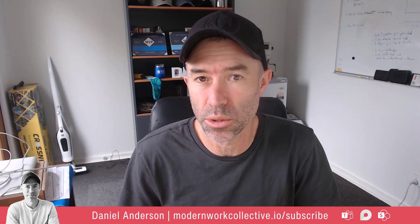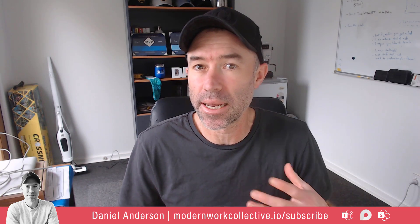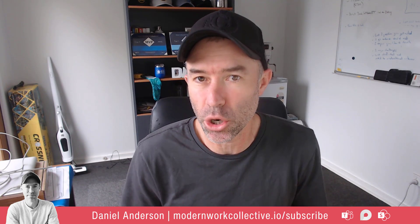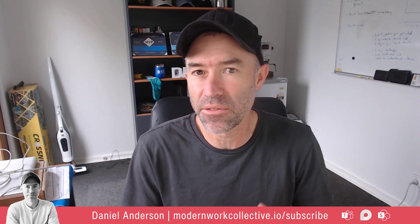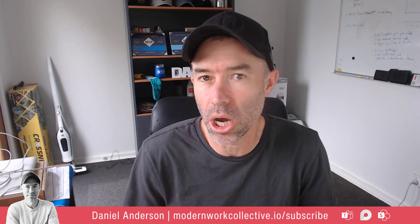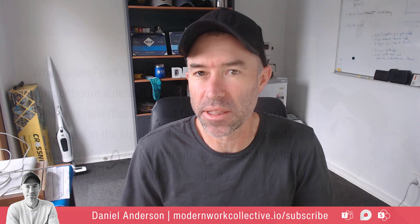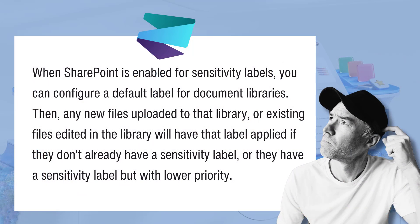Specifically, default sensitivity labels. This means you can classify an entire document library and set a default sensitivity label on the library, and then any document uploaded into that library gets automatically classified with that label as well. Existing files that are edited in the library will also have that label applied if they don't already have a sensitivity label or have one of a lower priority.